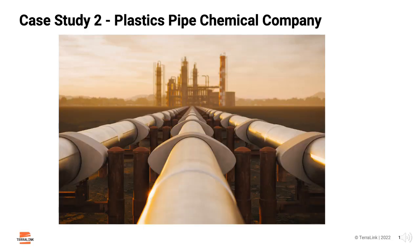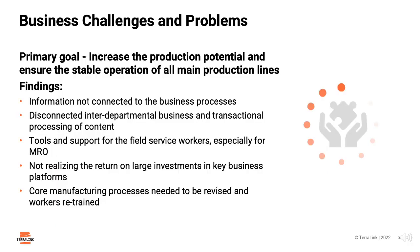Our second case study is of a 20,000-employee chemical company that specializes in producing industrial plastic piping and other plastic products for oil and gas companies and other industrial customers. In a highly regulated business, they produce upwards of 70% of the plastic piping used in commercial applications by several large Eastern European corporations. The goal was to increase production potential and ensure the stable operation of all main production lines, as the plant was not operating at full capacities on a regular and sustained basis.